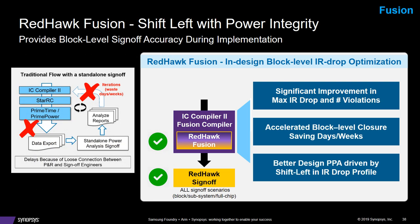Moving back into the fusion aspects — here's the Redhawk portion. Traditionally, you might go outside of the tool, through extraction, through Primetime, generate files, run Redhawk, and feed it back in. That's a long path and takes time. Now we can bring Redhawk into the tool, giving you access to Redhawk analysis — the IRDrop analysis, the PG augmentation from Redhawk — incorporated into Fusion Compiler. There are further advancements: IRDrop-aware CCD and IRDrop-aware ECO are forthcoming enhancements in the next couple SP releases. This gives you faster turnaround and access to more accurate timing because you can see the IRDrop in the timing.